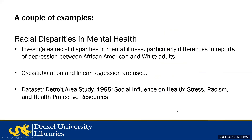Here are a couple of examples. One is looking at racial disparities in mental health, investigating differences in reports of depression between African American and white adults. The learning examples use both cross-tabulation and linear regression, using the data set from the Detroit Area Study of 1995, which looked at social influences on health, including stress, racism, and health protective resources.